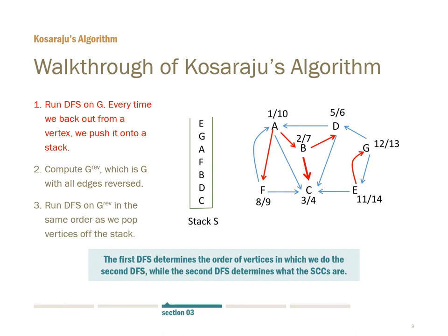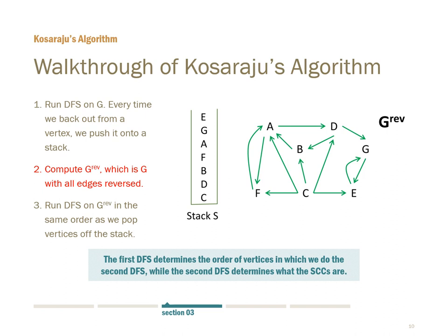Now we need to start a new DFS, controlled by our main loop. We start a new DFS on E, which hasn't been discovered. We go to G. G can go to D, but D has been discovered, so we back out from G and push it onto the stack. Last, we exit E and push it onto the stack, finishing the first round of DFS. Second, we compute G reverse — G with all edges reversed — and this is the computed G transpose.